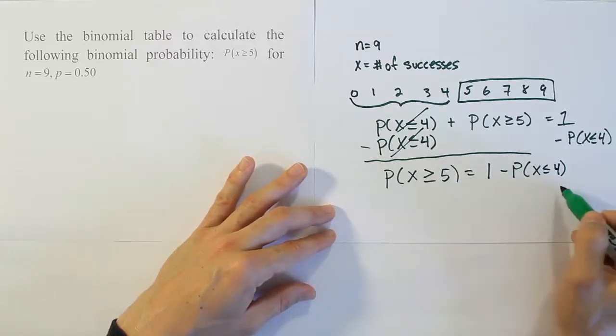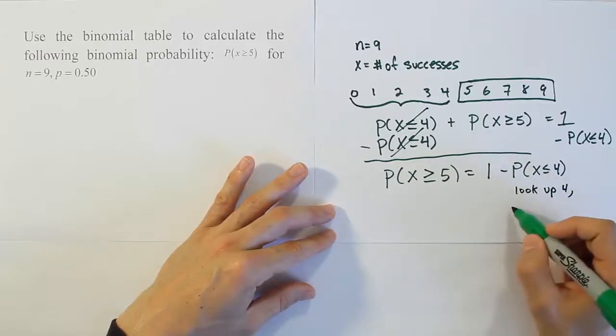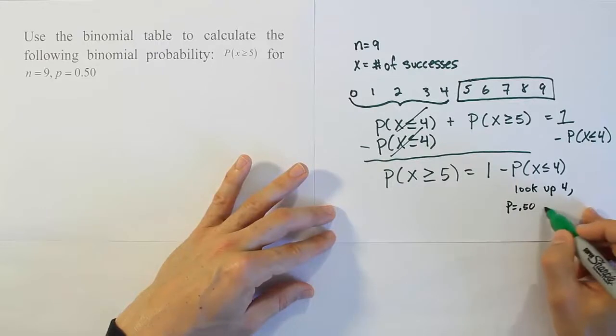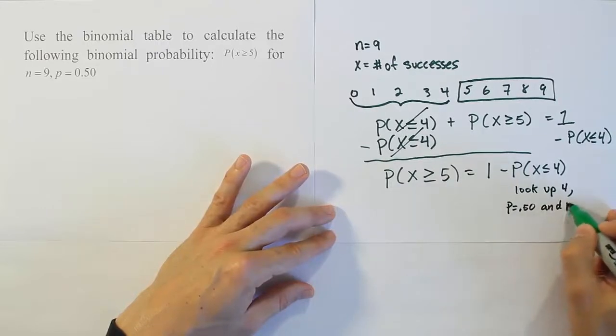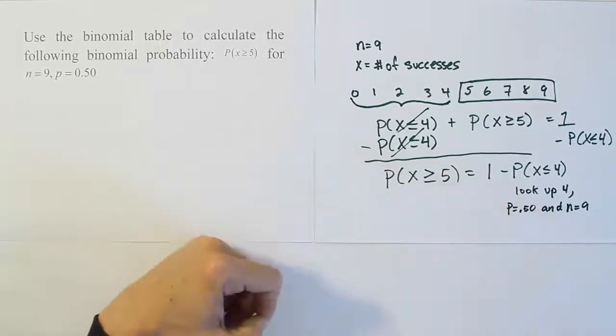Okay, so this is my answer then. I have to go to my table, look up 4, look up p equals 0.5, and n is equal to 9. When I do that, I'll subtract my answer from 1 and I'll have the solution for the problem. So let's go look at our table now. We're looking up 4, 50% for p, and n equals 9.